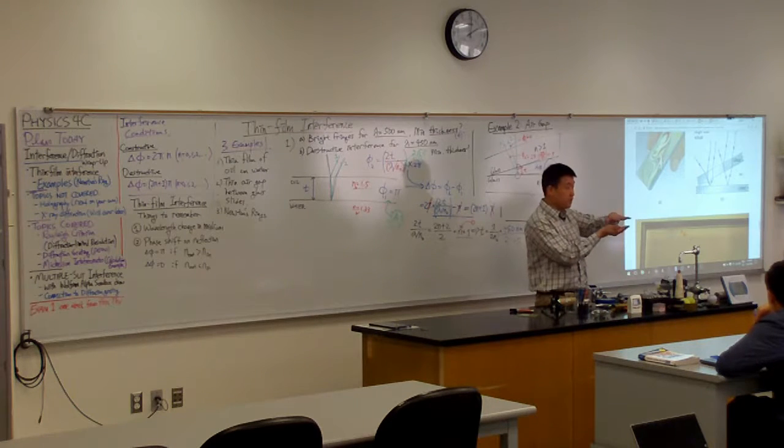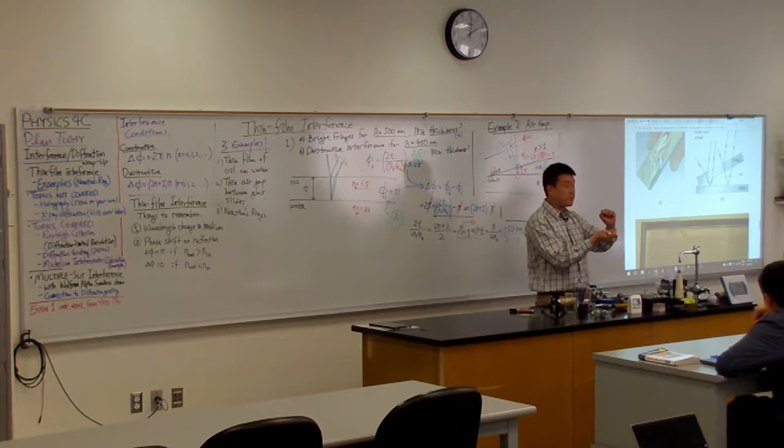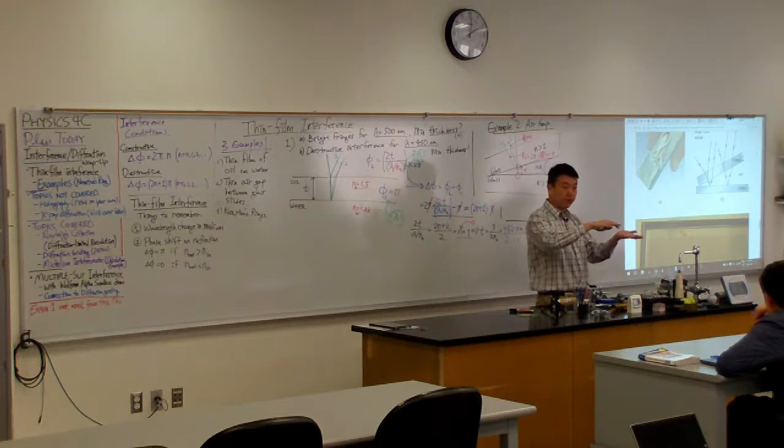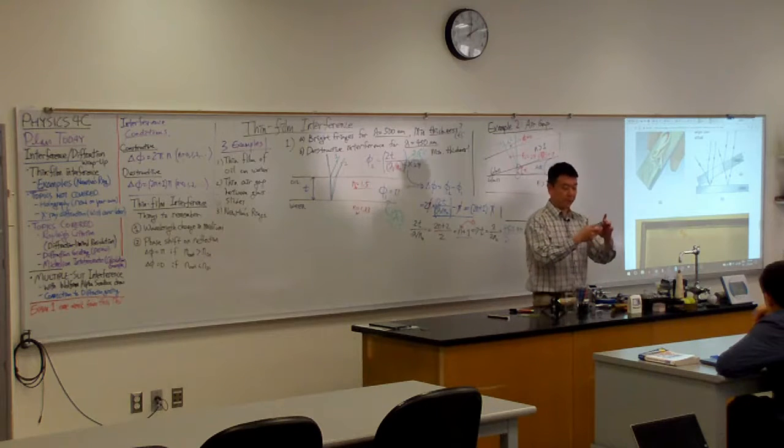It's an air gap between two pieces of glass. It's how the thickness varies. It's given by the geometry of the lens. So you guys can look at this, I guess, after you evaluate me.